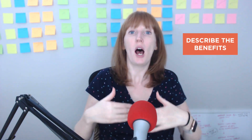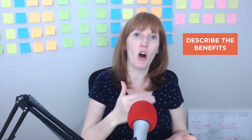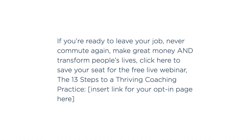The fifth element is to describe the desired outcome or the benefits of whatever free thing you're giving away. This time you're actually going to be hitting on the positives, not so much the pain of the problem. So you might say: if you're ready to leave your job, never commute again, make great money, and transform people's lives. There you've just outlined all the benefits of actually transforming oneself into a coach.